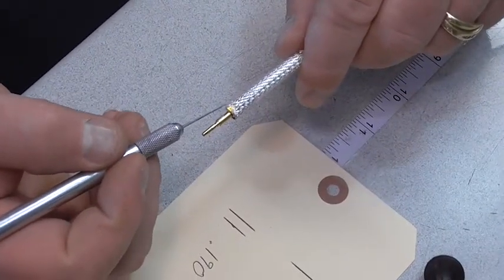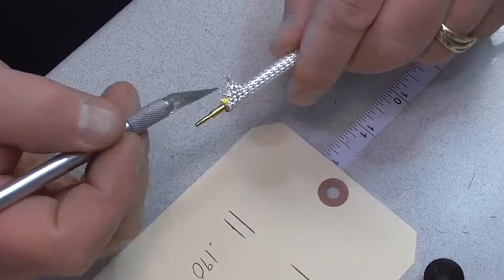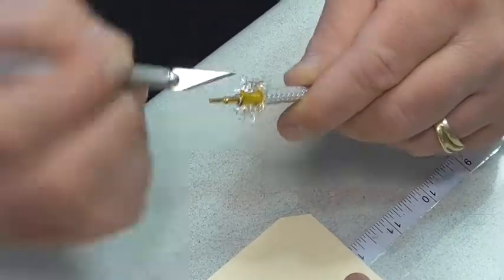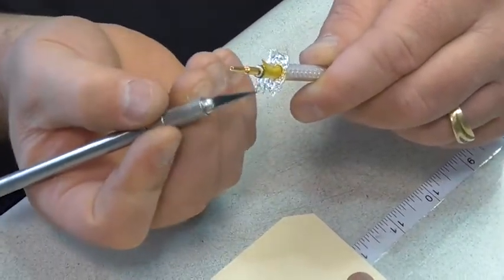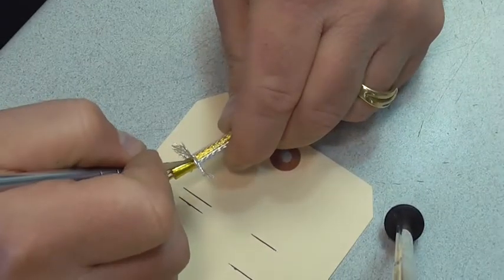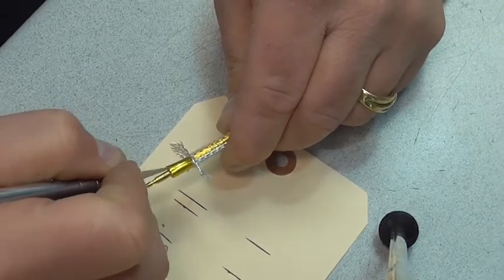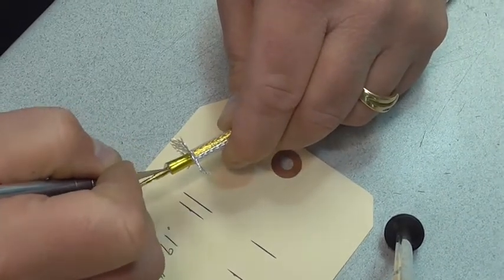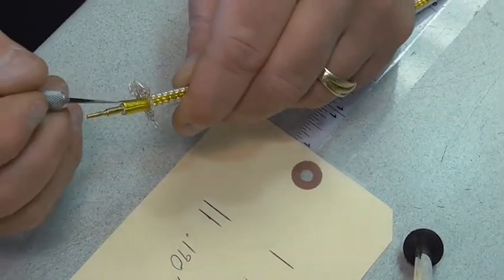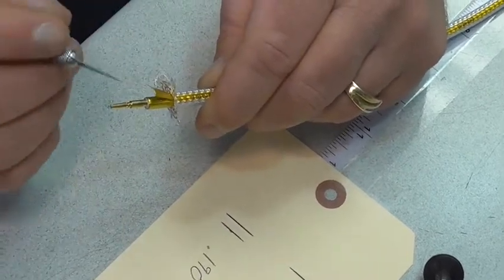The next step is to flare out the wire braids to approximately 45 degrees. Then, you will slit the foil lengthwise in three or four places.